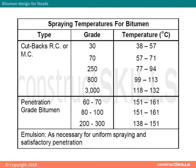Spraying temperatures for bitumen — for cutback RC or MC type: Grade 30 is 38–57°C, Grade 70 is 57–71°C, Grade 250 is 77–94°C, Grade 800 is 99–113°C, Grade 3000 is 118–132°C.